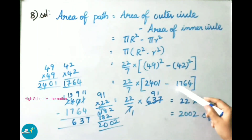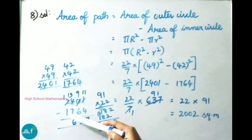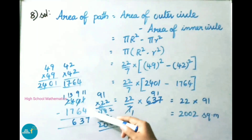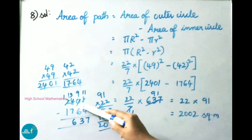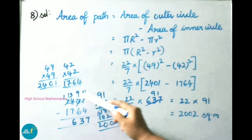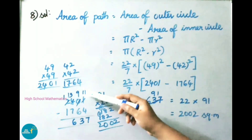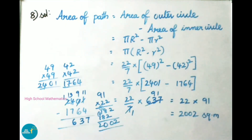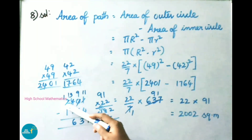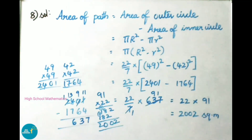Now we subtract: 2401 minus 1764. Borrowing as needed: 11 minus 4 is 7, 9 minus 6 is 3, and 13 minus 7 is 6, giving 637. So R squared minus r squared equals 637.